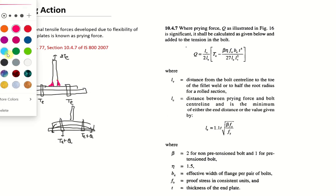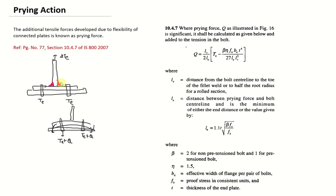So to understand all these parameters: LV is the distance from the bolt centerline to the toe of the fillet weld. So for you consider this is LV. So that is from toe of the fillet weld to the centerline of the bolt.